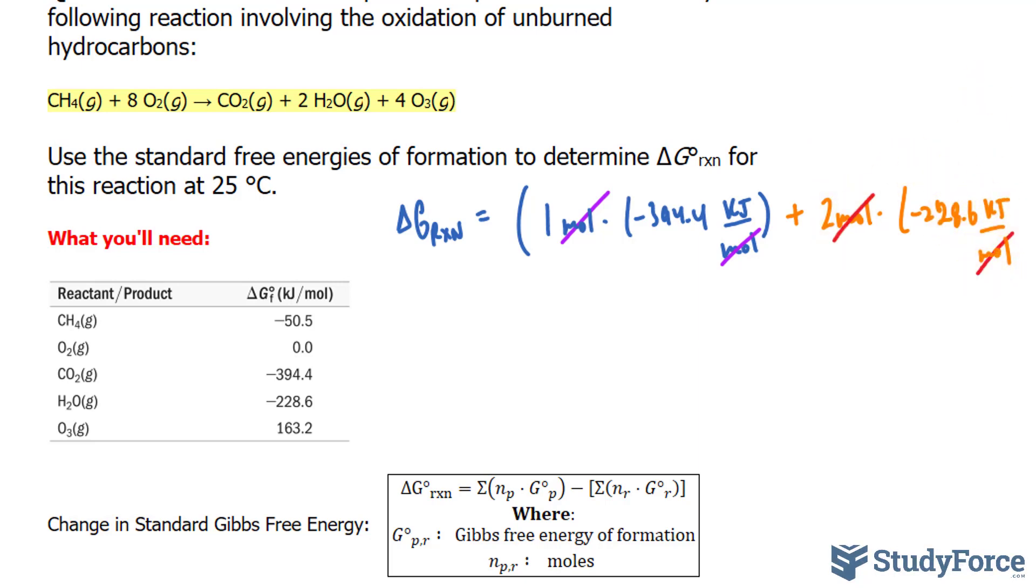Finally, the last product molecule is ozone: four moles times 163.2 kilojoules per mole. Now we'll focus on the reactants.